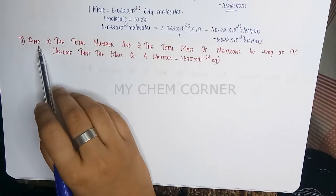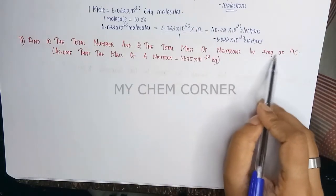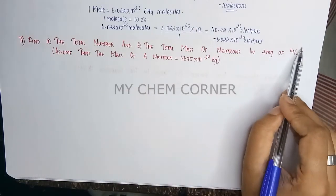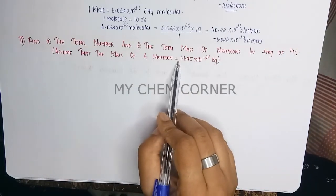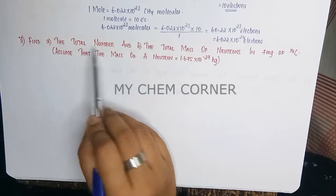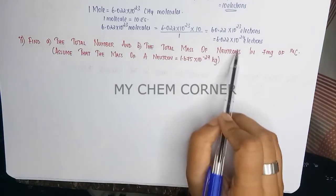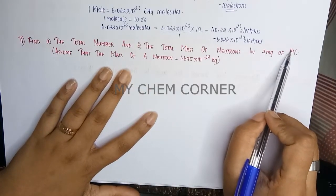Now the next question is: find the total number and total mass of neutrons in 7 milligrams of carbon-14, assuming that the mass of a neutron is given. So here what are we supposed to find out? We're supposed to find out the total number and total mass of neutrons from a certain value given to us.